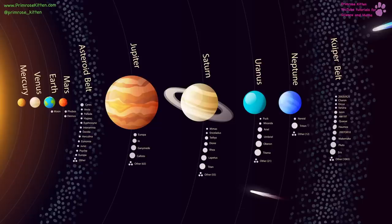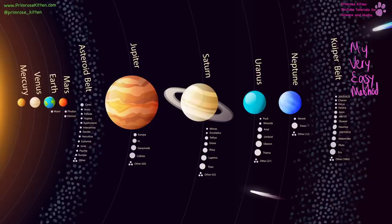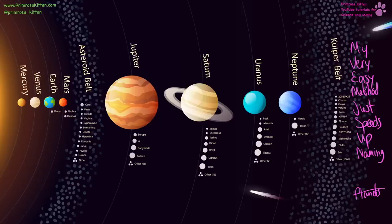The solar system starts with the sun, then Mercury, Venus, Earth, Mars with moons, the asteroid belt with some dwarf planets, Jupiter, Saturn, Uranus, Neptune, and Pluto — now classified as a dwarf planet. To remember the order: My Very Easy Method Just Speeds Up Naming. If you have other mnemonics, share them in the comments!